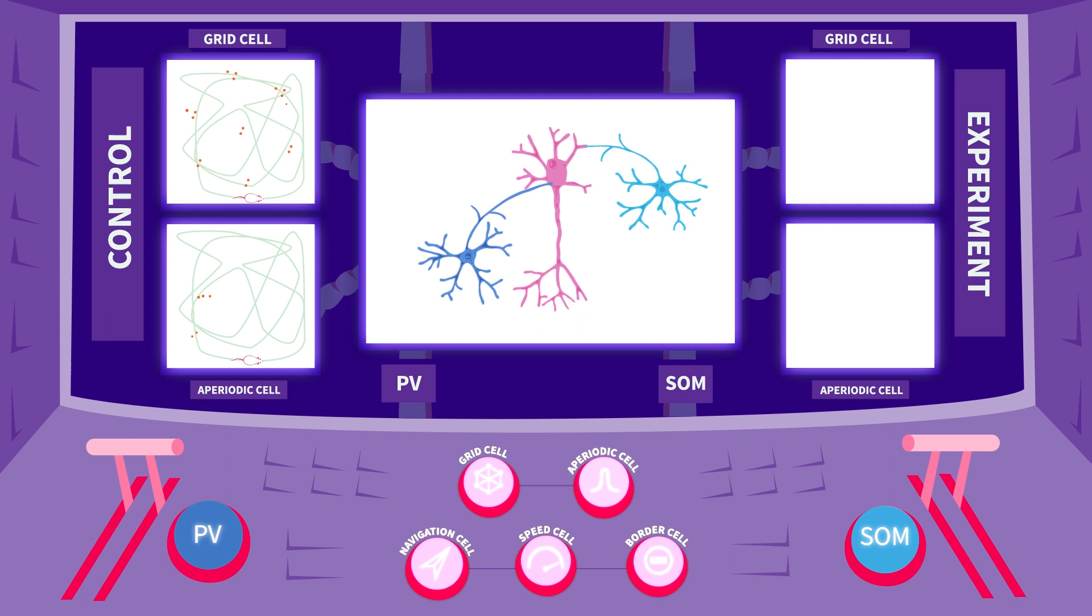In the baseline state, before any intervention, signals from the grid cell formed a hexagonal pattern covering the surface of the box. In contrast, the spikes from the aperiodic cell drew up one or several larger fields with no particular pattern.